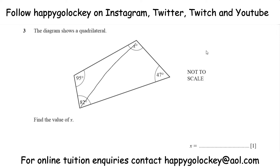If we draw a line across there, we have one, two triangles. So we know that two triangles — two lots of 180 — is 360.